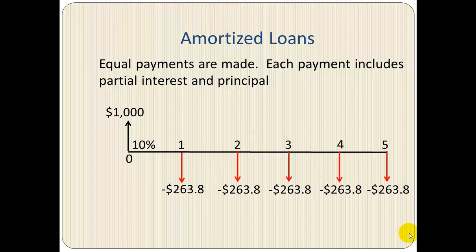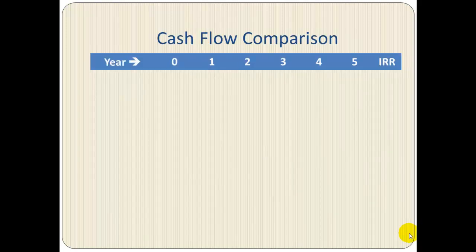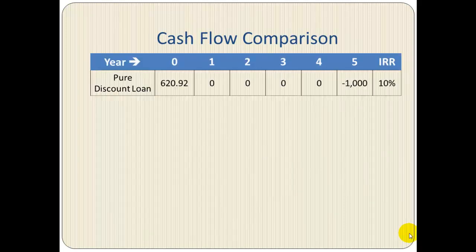With amortized loans, the principal and interest payments are made periodically — in this case every year. The payment is two hundred and sixty-three dollars and eighty cents, which we can calculate using a financial calculator. There are five equal payments of two sixty-three eighty. Let's compare the cash flows from each loan type.